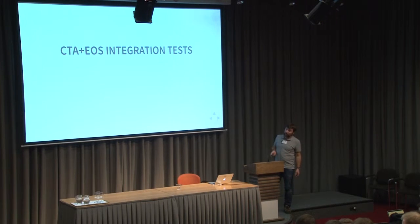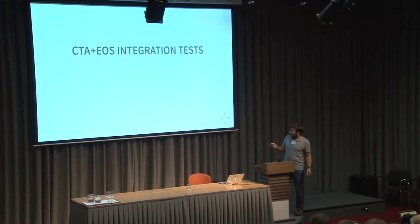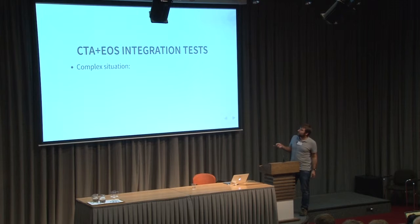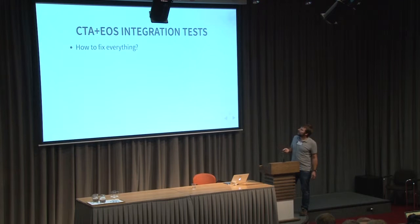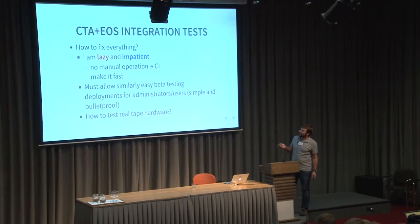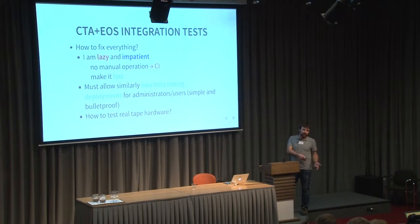So with CTA, I was appointed by my boss to do system integration. I wanted to avoid the old approach because the situation here is more complex: we have two distinct software projects, EOS and CTA, and more dependencies — we need one object store in addition. I'm lazy and impatient, so I don't want any manual operation. Continuous integration is the perfect solution: do everything at every commit, make it fast, allow easy beta testing deployment for administrators and users, make it simple so my boss can run it, and bulletproof so he doesn't come to my office with problems.